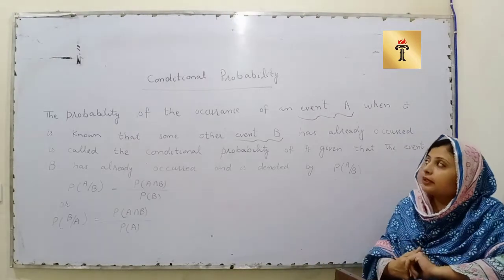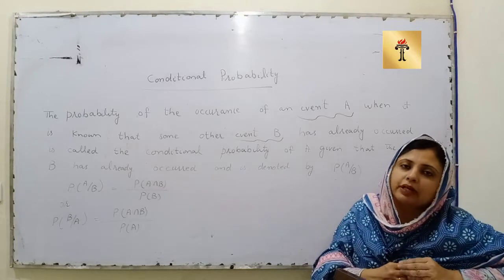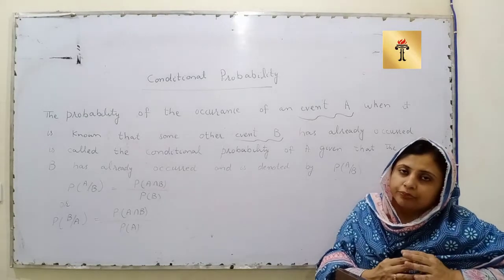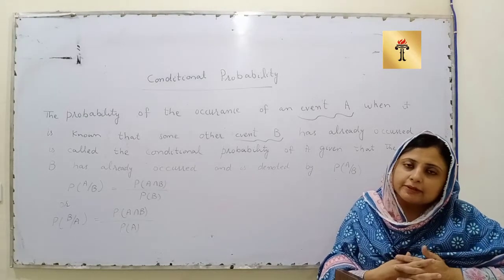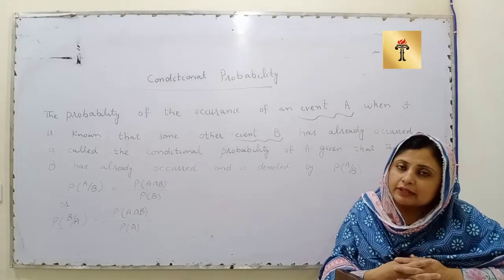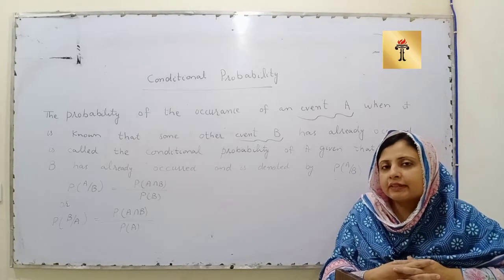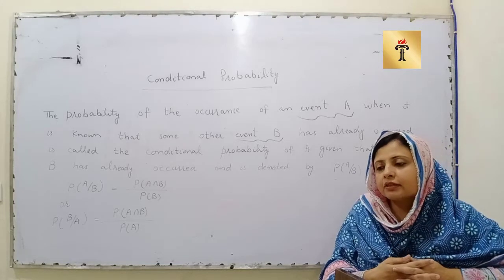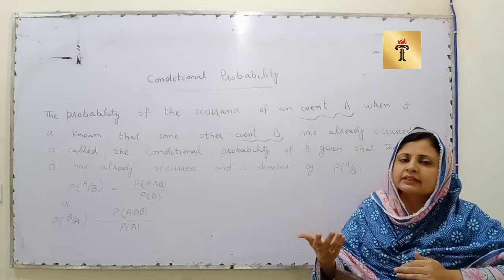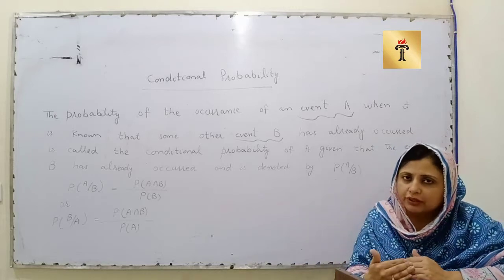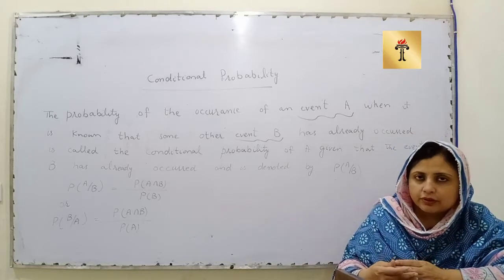Conditional probability — as the name implies, there is a condition applied. For example, consider sentences in English: 'When the train came, we will go' or 'When the sun rises, we will get up.' In these cases, if the first condition is fulfilled, then the other condition will also be fulfilled.